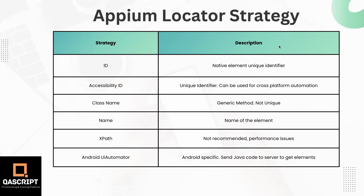These are the different strategies which are present in Appium. One is the ID. ID is always a unique identifier — it is a native element unique identifier, which means for native applications, you can use the ID locator in order to locate any particular element.